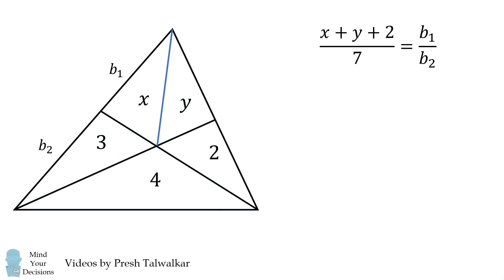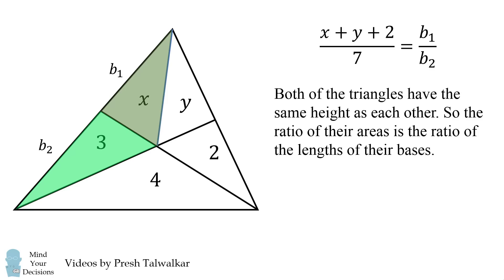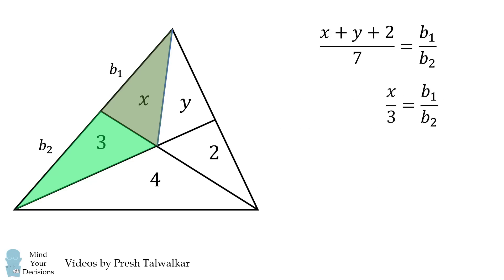So now let's look at some other ratios of areas of triangles. Here are two green triangles. Both of these triangles have the same height as each other. So again, the ratio of the areas will be the ratio of the lengths of their bases. Now these two triangles have the same bases of b1 and b2 as the previous blue triangles. So we have x over 3 is equal to b1 over b2. So now we have two equations that are both equal to b1 over b2. Therefore, we can set these two equations equal to each other.